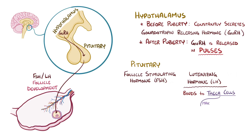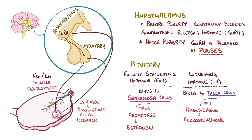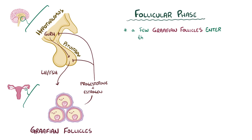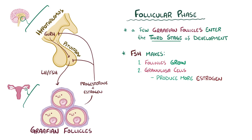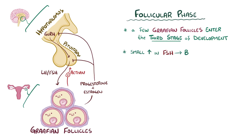LH binds to LH receptors on theca cells and they make progesterone and androstenedione. FSH binds to FSH receptors on granulosa cells and they make aromatase and, as a consequence, oestrogen. Serum levels of oestrogen and progesterone act as feedback for the command centre in the brain, which adjusts its hormone production according to the phases of the menstrual cycle. In addition to oestrogen, the granulosa cells also secrete a hormone called activin, which stimulates FSH production, binds to FSH receptors, and stimulates the activity of granulosa cell aromatase as well. So early in the follicular phase, a small rise in FSH leads to a large increase in oestrogen.